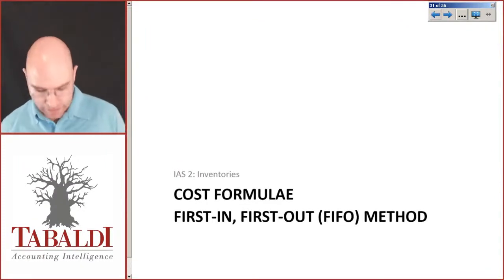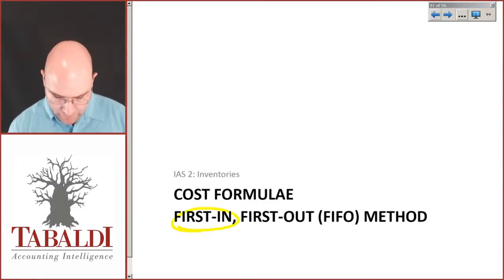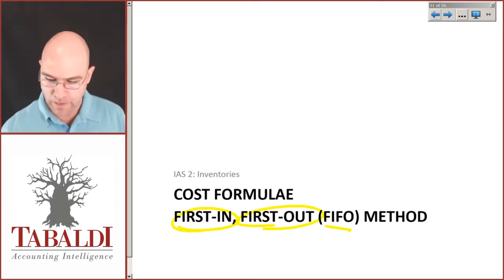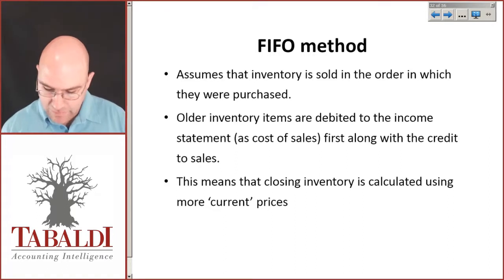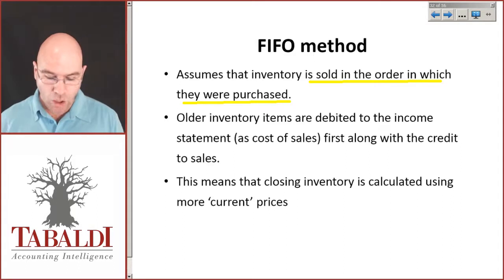The next cost formula we're going to look at is the first in first out. We usually call this the FIFO method. Now here, this method assumes that inventory is sold in the order in which it was purchased.